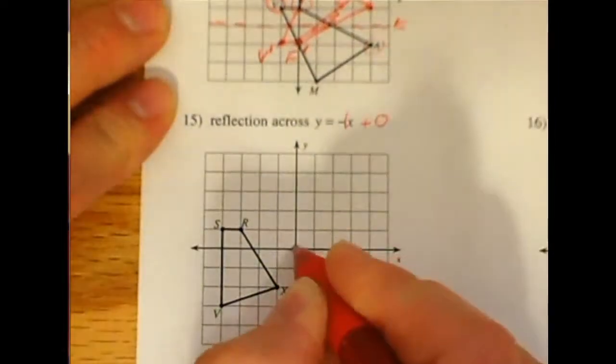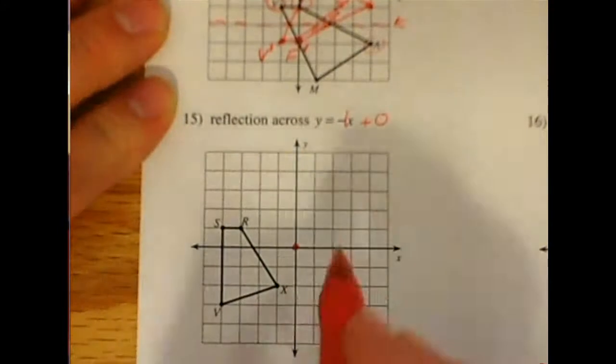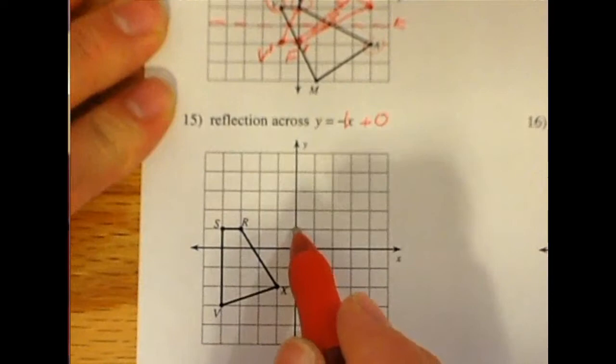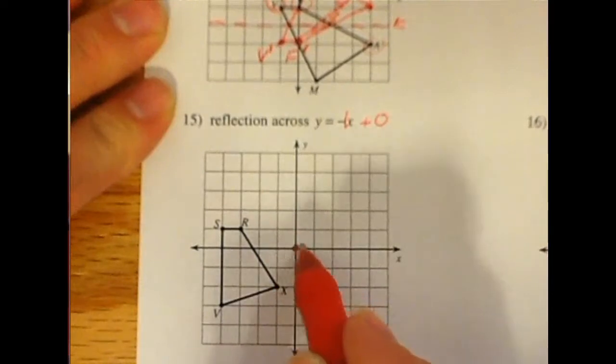You start in the origin, the center of the graph. And for every 1 that you go up, you would be going backwards 1. Or another way of looking at it, every 1 forward, you would go down 1.